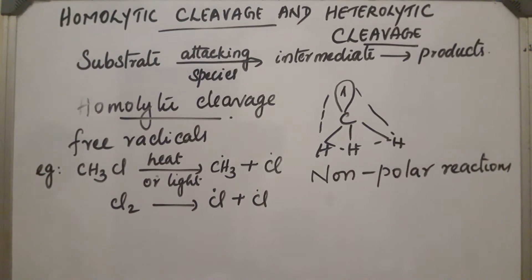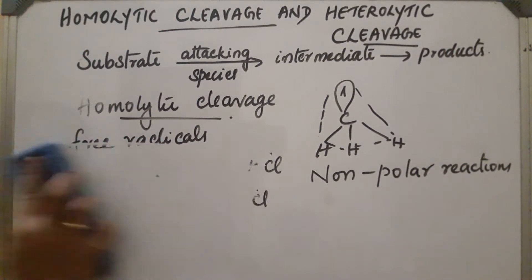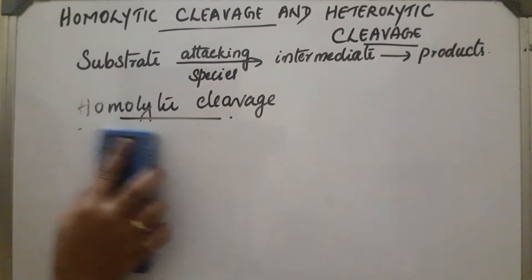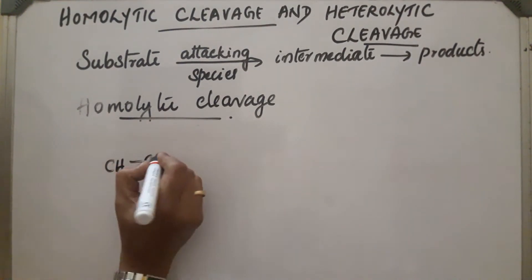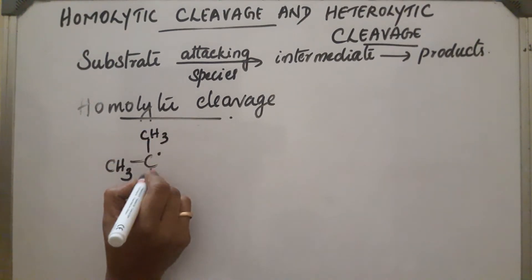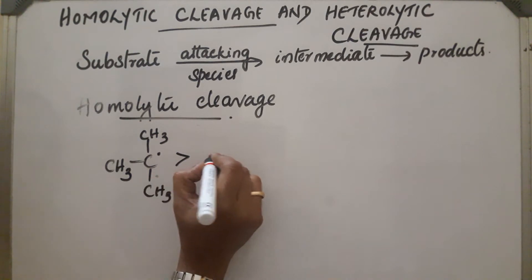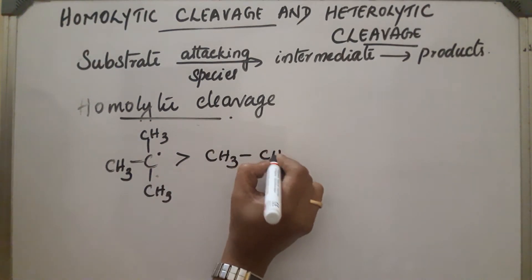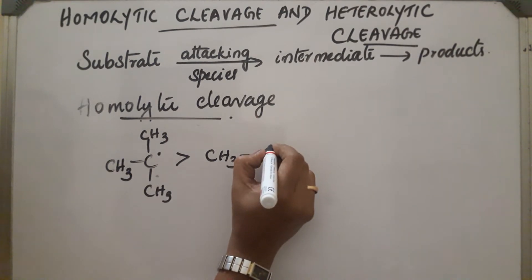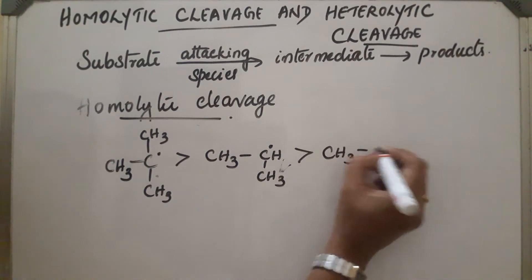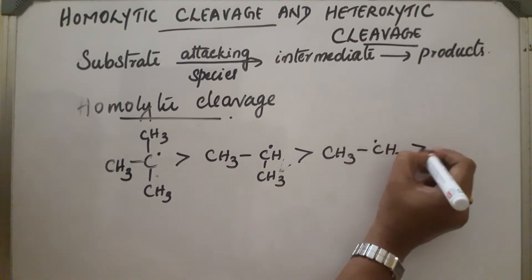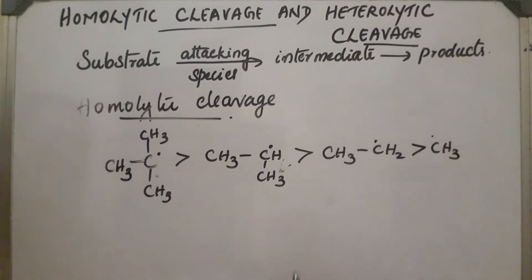The stability order of radicals is: tertiary is highly stable, then secondary, then primary. Tertiary radicals are the most stable. These radicals are highly reactive and get converted into products.